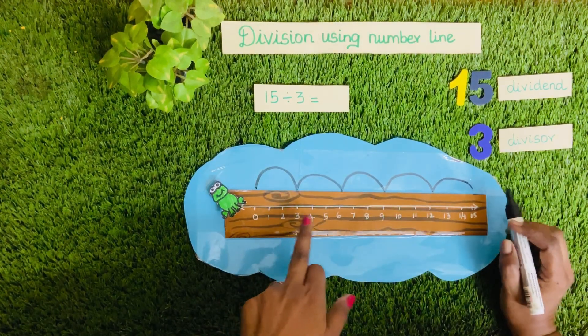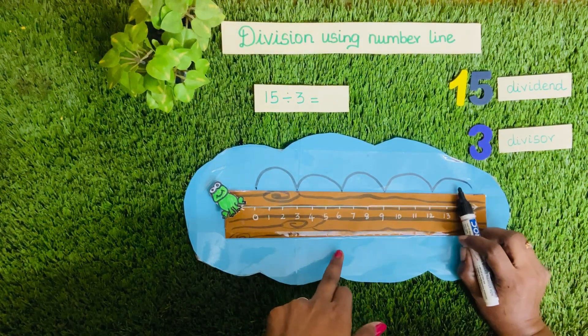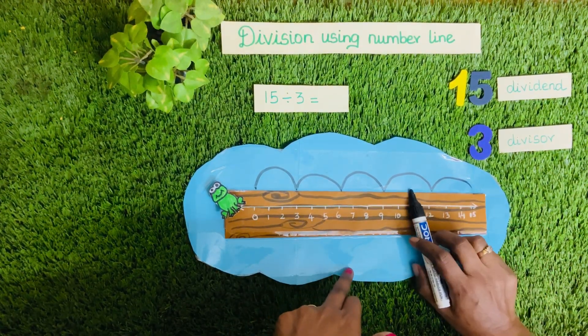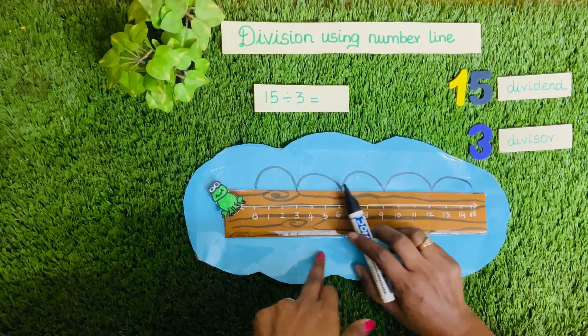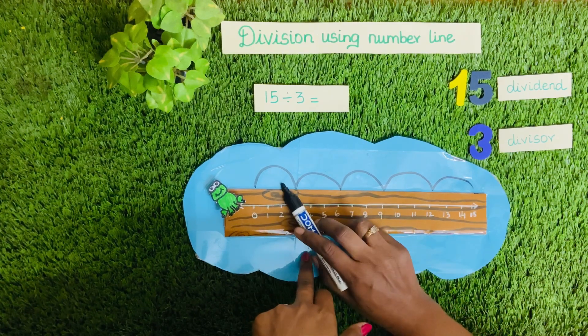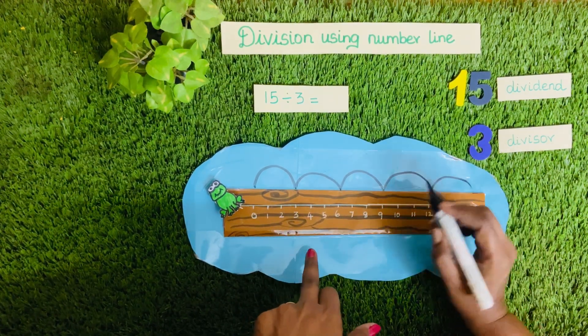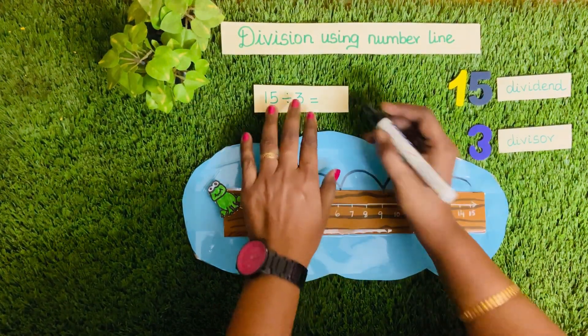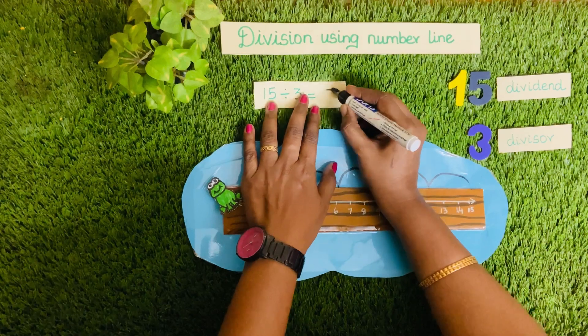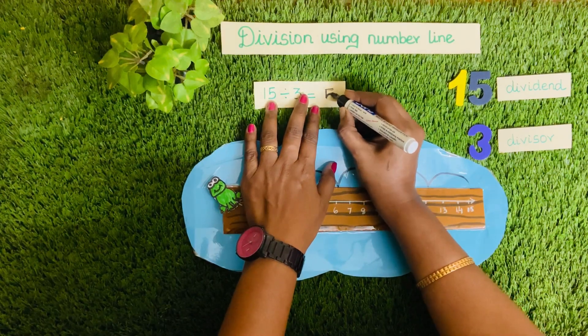So how many jumps are there? 1, 2, 3, 4, 5 — 5 jumps. So the answer: 15 divided by 3 is equal to 5.